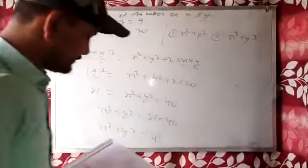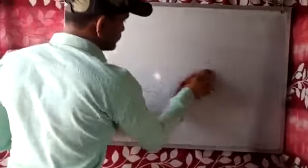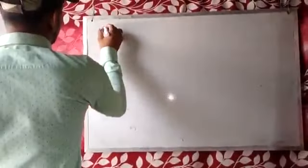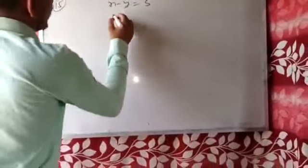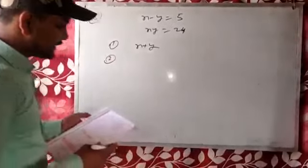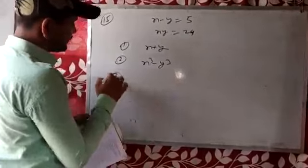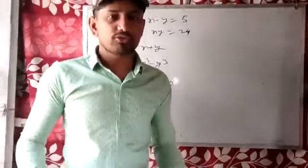Question number 15: two positive numbers x and y. The difference is 5, so x minus y equals 5, and their product is 24, so xy equals 24. Find the sum x plus y, the difference of their cubes x cube minus y cube, and the sum of their cubes x cube plus y cube. I hope this is very easy — try it at your home.